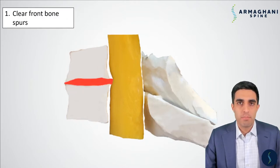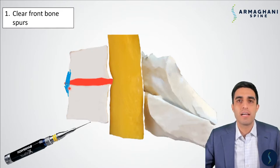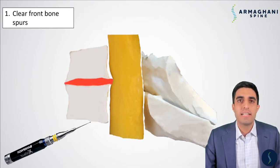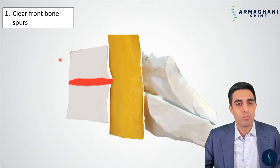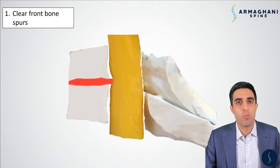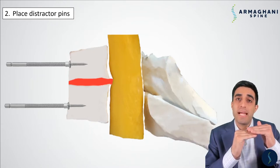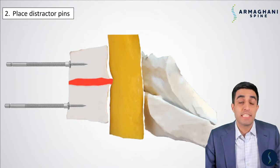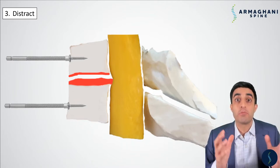So how do we perform this procedure? The first step is we take our burr and identify the bone spurs on the front of the vertebrae, highlighted here in blue. We take this high-speed burr and shave away that anterior part of the bone spurs to make the area where your vertebrae are flat. Following that, we place distractor pins into the vertebrae. What these distractor pins do is create space between the vertebrae to try to remake the size of your disc space. After placing the distractor pins, we distract them apart creating more space in the disc space area for us to remove that degenerative disc.